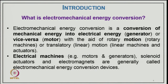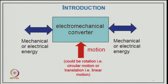Electromechanical energy conversion is the conversion of mechanical energy into electrical energy, especially in the case of a generator, or vice versa in a motor, with the aid of rotary motion — typically rotary electrical machines — or translatory, typically linear motion in linear machines and actuators. Electrical machines such as motors and generators, solenoid actuators and electromagnets are generally called electromechanical energy conversion devices, where input can be either mechanical or electrical energy.